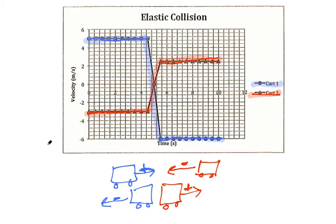Cart one is less massive — it's easy to get it to change direction compared to cart two. We can safely say cart one (blue) is less massive and cart two is more massive. This is inferred from the motion change even without a number given for mass, because momentum is based on mass and velocity. We're assuming each cart's mass stays constant from beginning to end — it wouldn't make sense for a cart to switch its mass partway through.